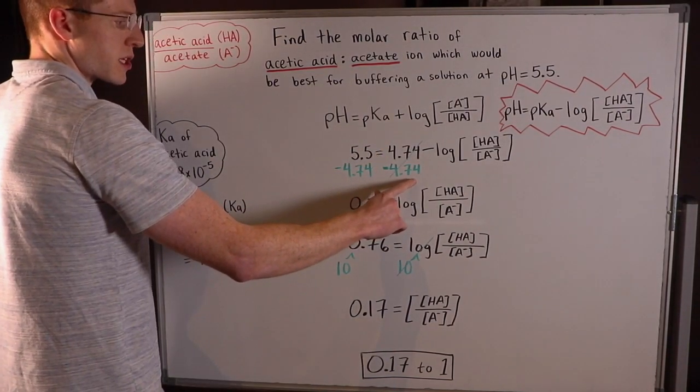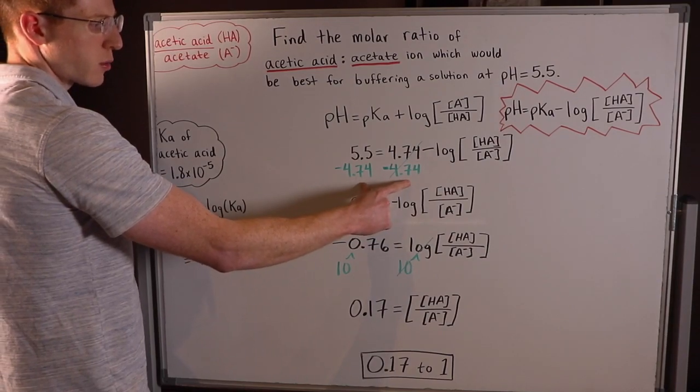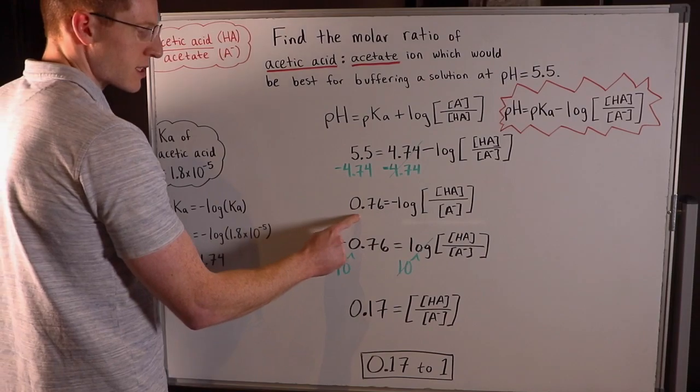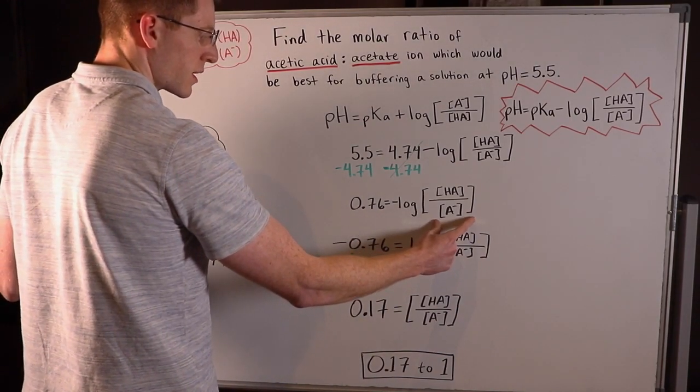So the next thing I did here was I subtracted 4.74 from both sides of the equal sign in order to cancel this out right here. And I was left with 0.76 equals negative log of the ratio that we're interested in.